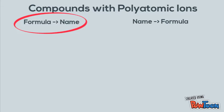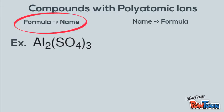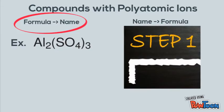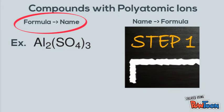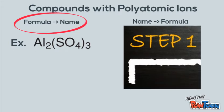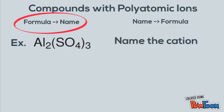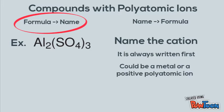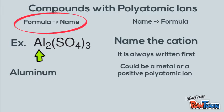So if this is our example right here, the first step is going to be to name the cation — the positive ion, which is always written first on the left. It could either be a metal or a positive polyatomic ion. In this case, it's Al, which is a positive metal, and that's aluminum.